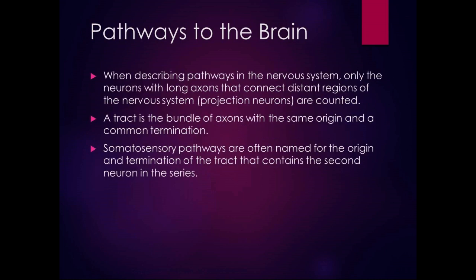When we're talking about the pathways in the nervous system, we're only talking about neurons with long axons that connect distant regions of the nervous system. Those long-axon neurons are called projection neurons. There are all sorts of little interneurons — local messengers that take things from here to there — but when talking about somatosensory tracts and motor tracts, we're talking about the projection neurons, the ones taking information a long distance. It's the difference between short local roads and the highway — the pathways we're discussing are the highway.